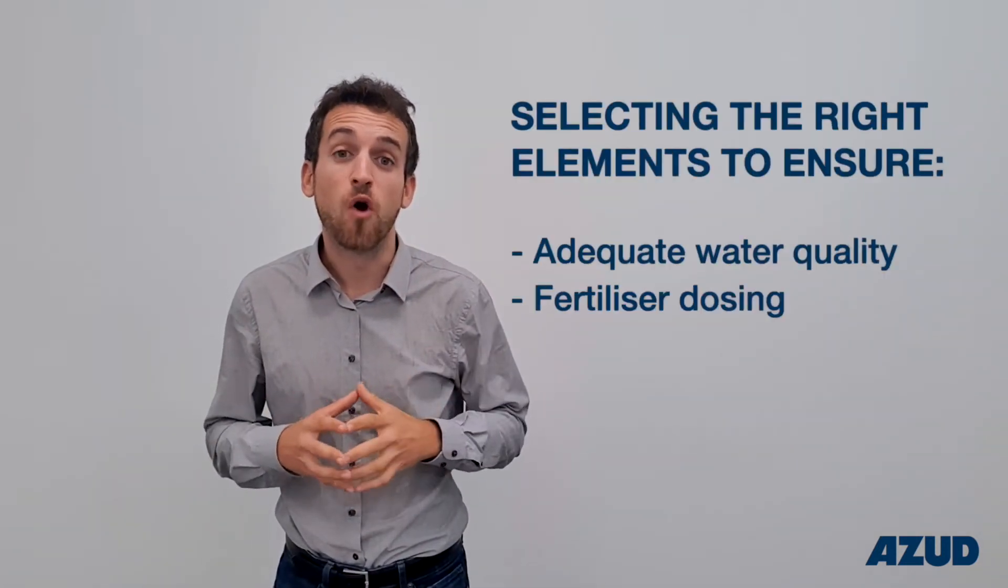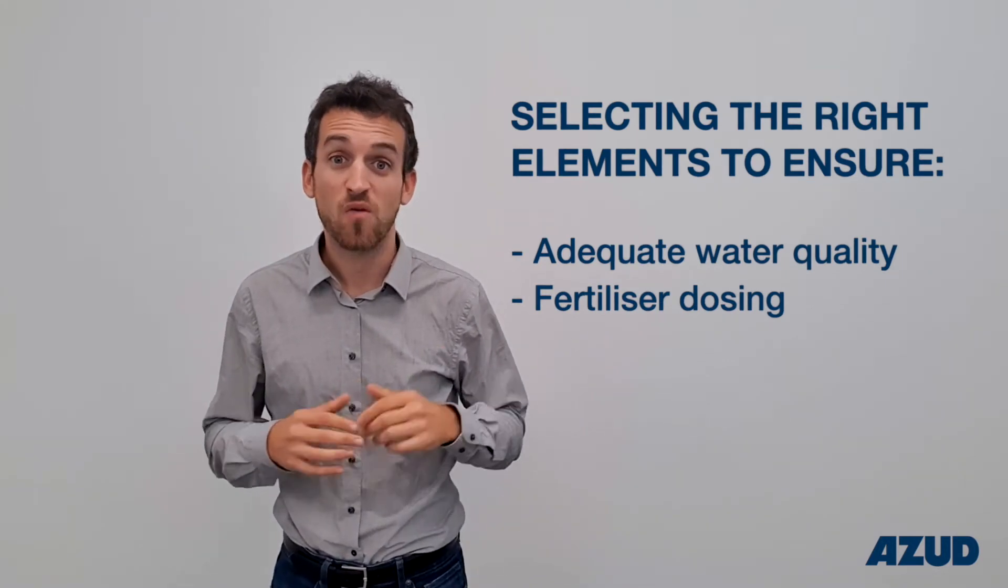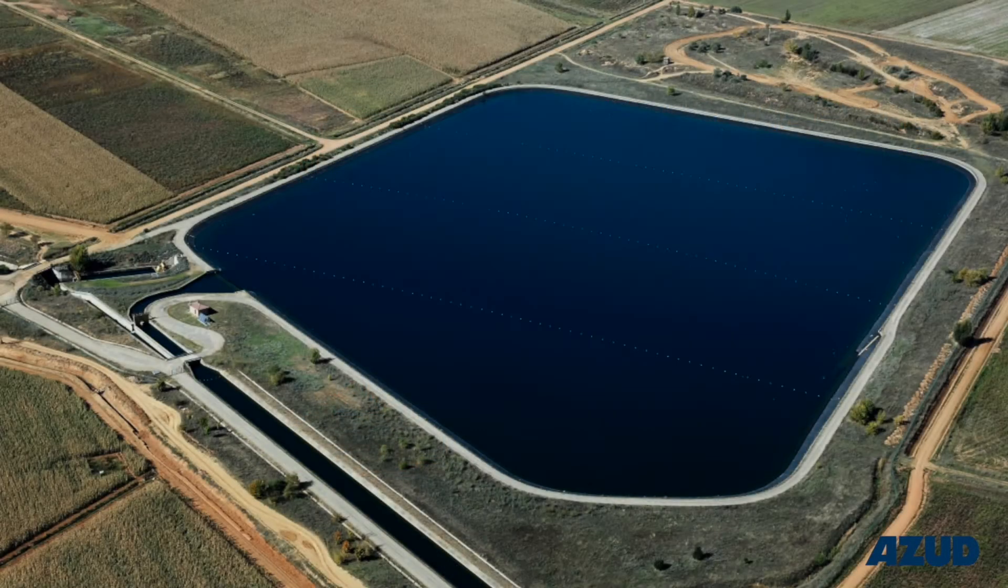Secondly, the right selection of all those elements included within the irrigation system. For instance, we need to ensure that the irrigation water quality is suitable for its application.